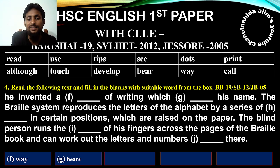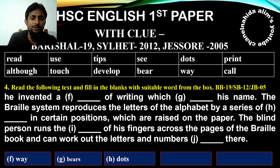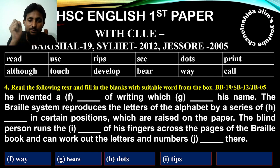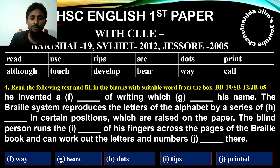The Braille system produces the letters of the alphabet by a series of dots in certain positions, which are raised on the paper. The blind person runs the tips of their fingers over the dots and can work out the letters and numbers printed there.